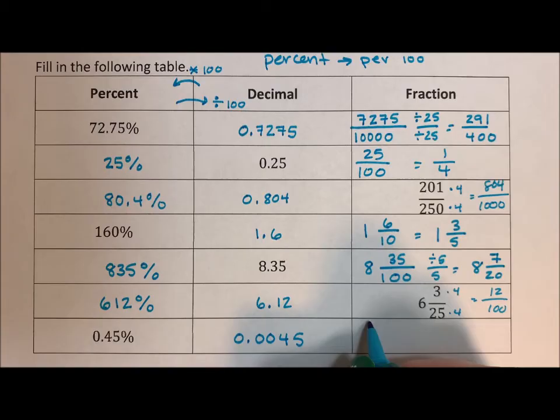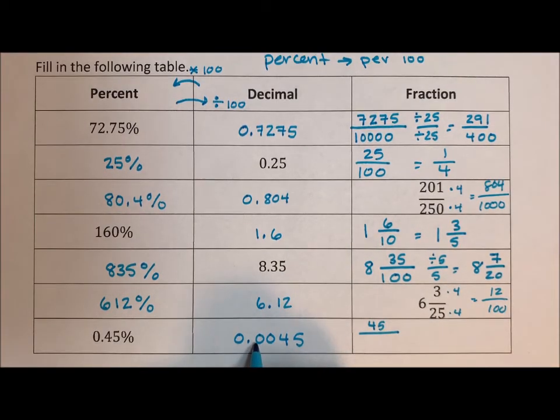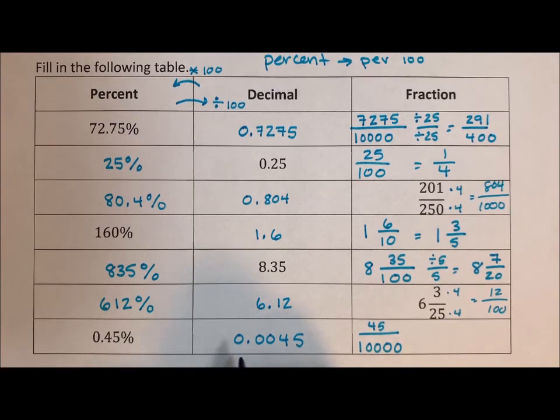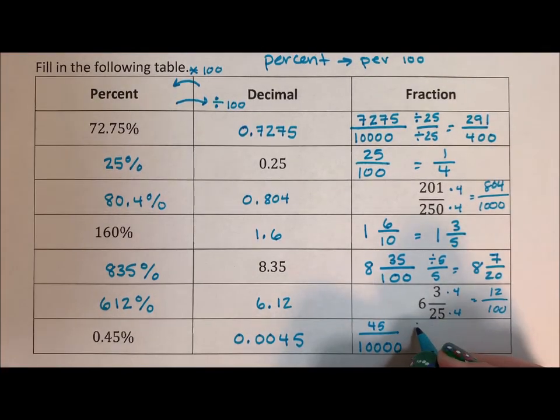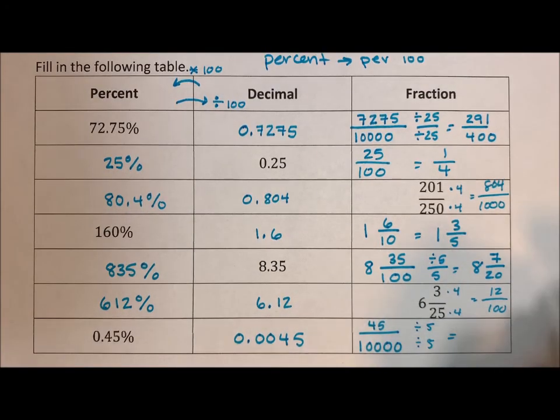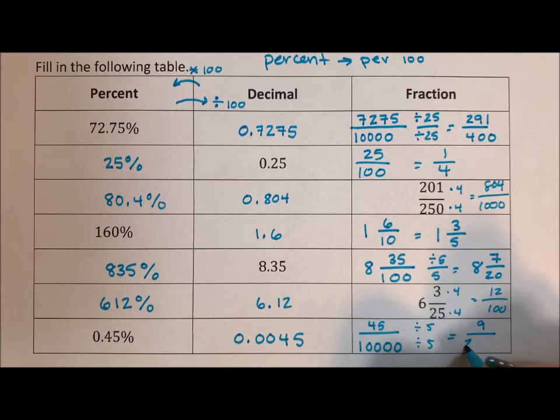So I'm going to put a 45. 1, 2, 3, 4. That's 4 zeros. Remember, I said there's a zero for every number after the decimal point. I didn't say non-zero number. I said every number. Divide top and bottom by 5, and I get 9 over 2000.